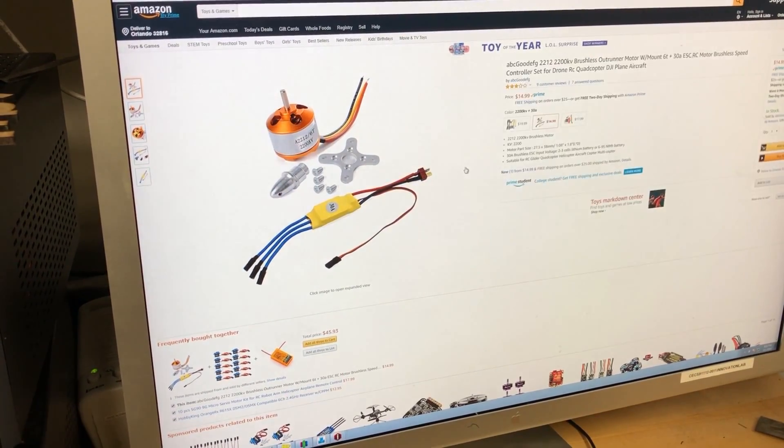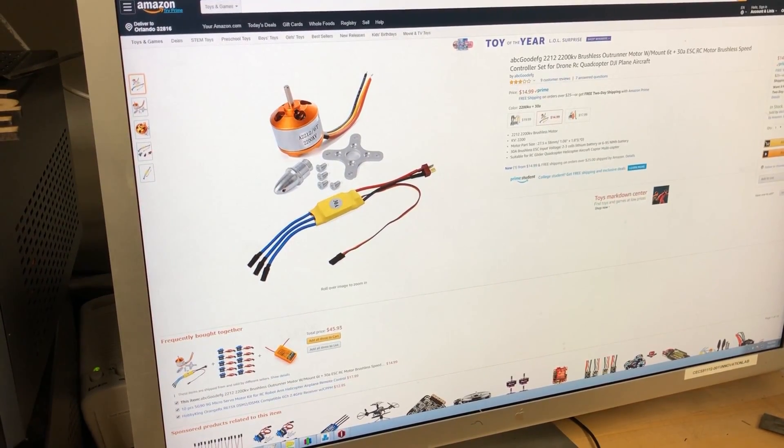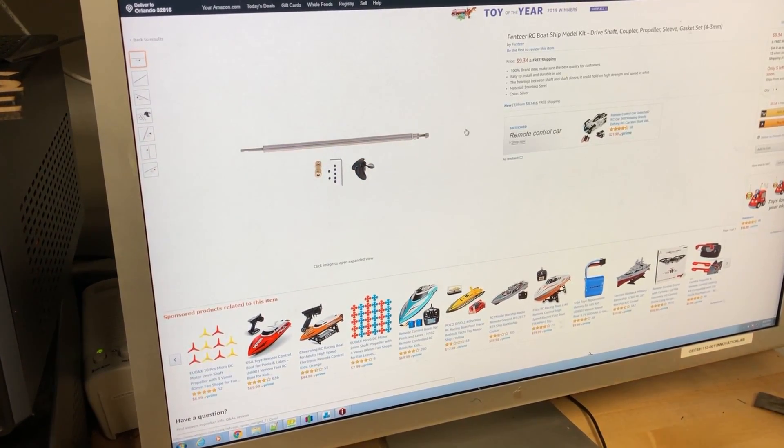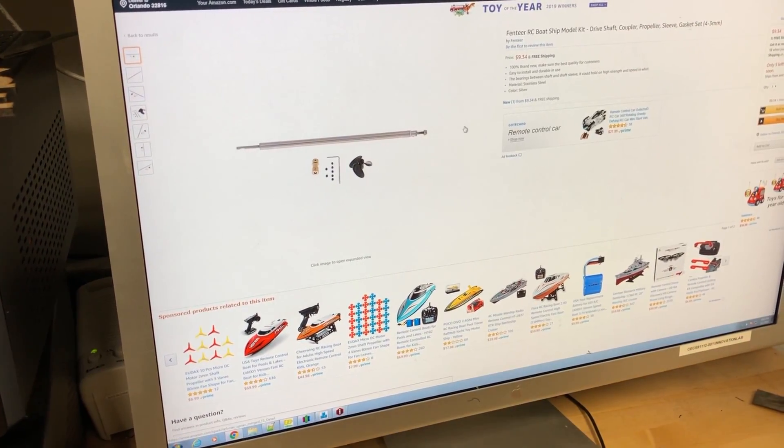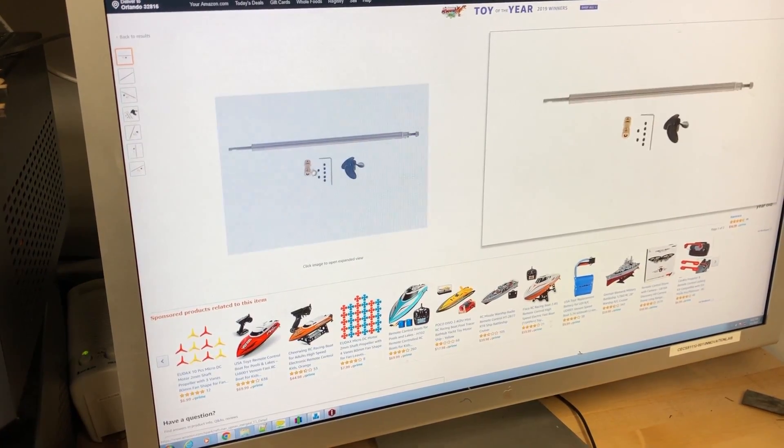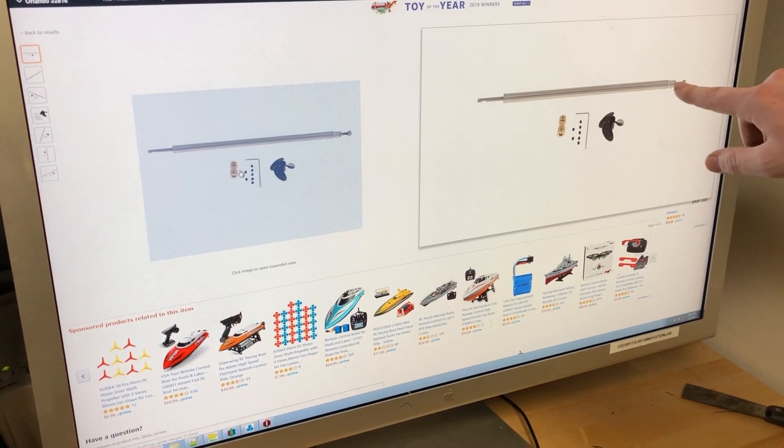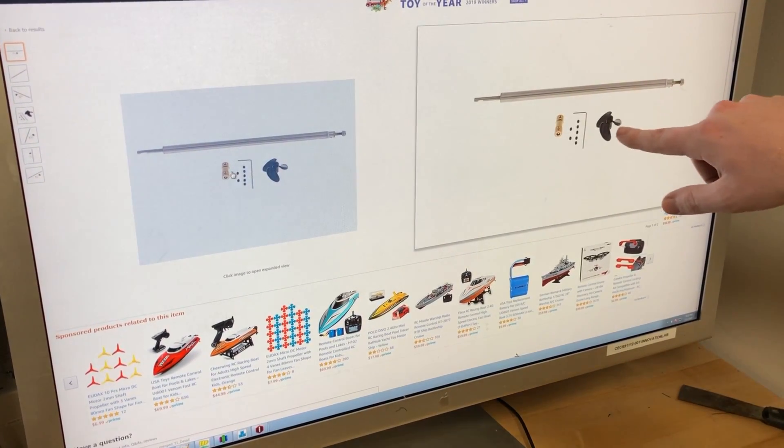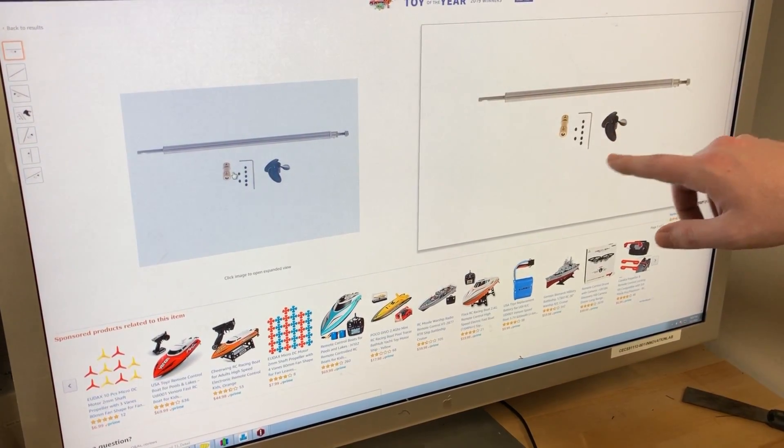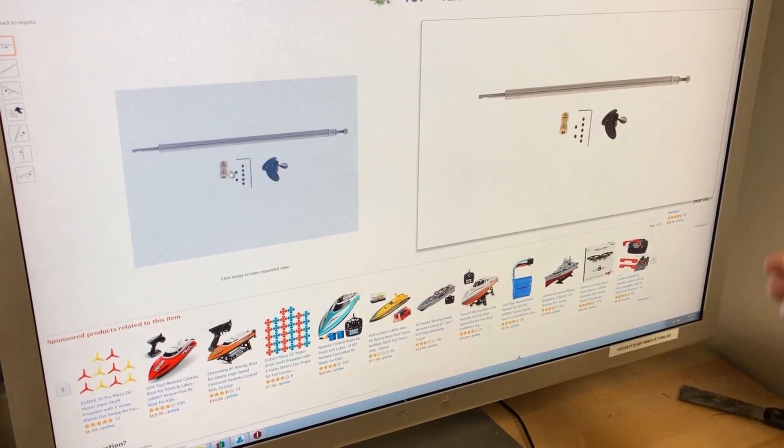Another thing to get is the mounting hardware for the shaft. This one here is designed to interface with that motor specifically. It has this little coupler here that couples to the motor shaft. It has a collar here that interfaces with the propeller. And it's got set screws and all the hardware you need to assemble it.